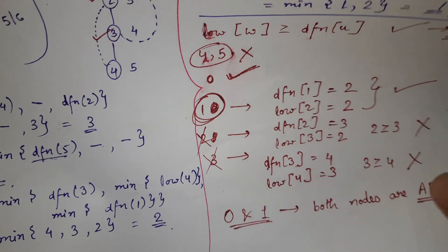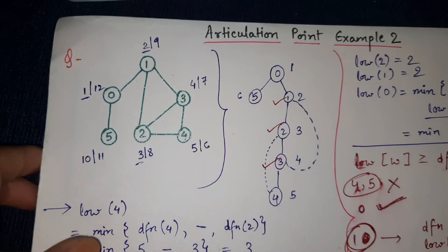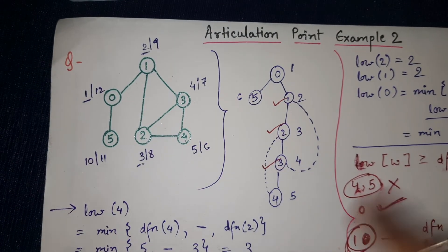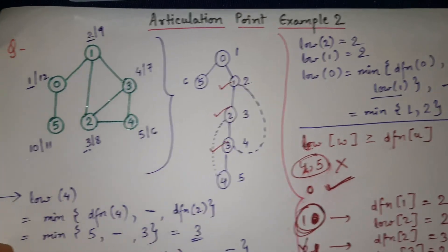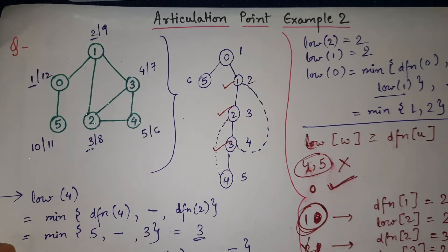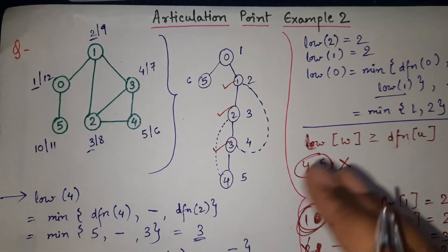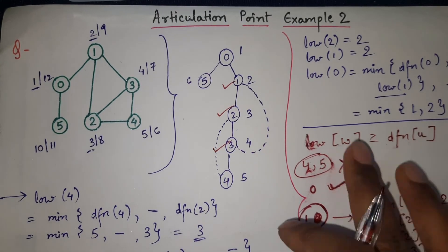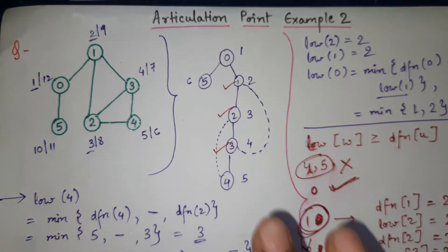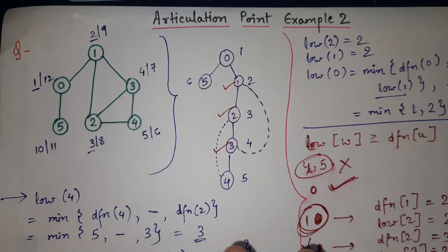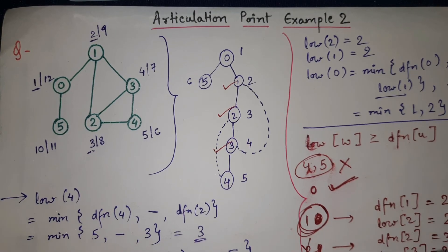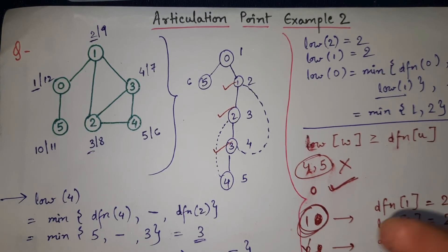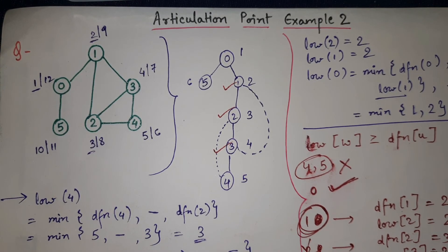In the previous video I explained one type of example, and this is another variation. I hope with both videos you are now capable of solving any question on articulation points and bi-connected components. If you have any doubts or want me to solve another example, ask in the comment section — I will be happy to help. Thank you so much.